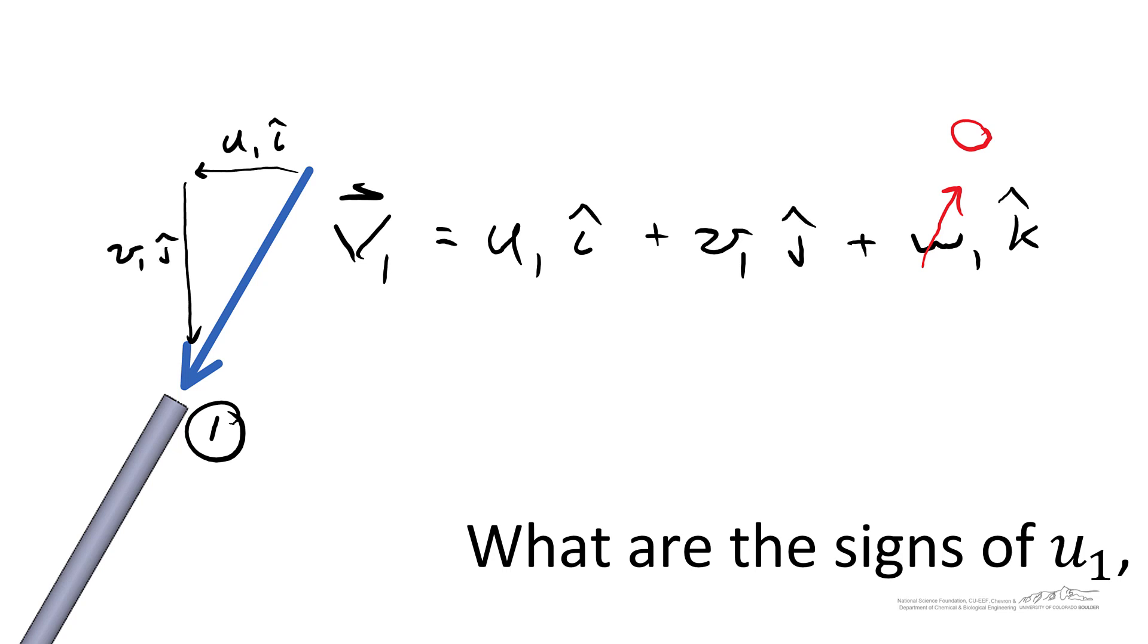Looking at it, u1 is acting in the negative x direction, so u1 is less than zero. Similarly, v1 is acting in the negative y direction, so v1 is also less than zero.